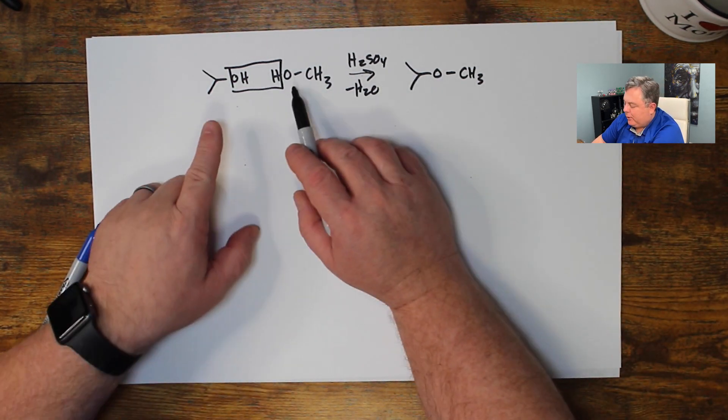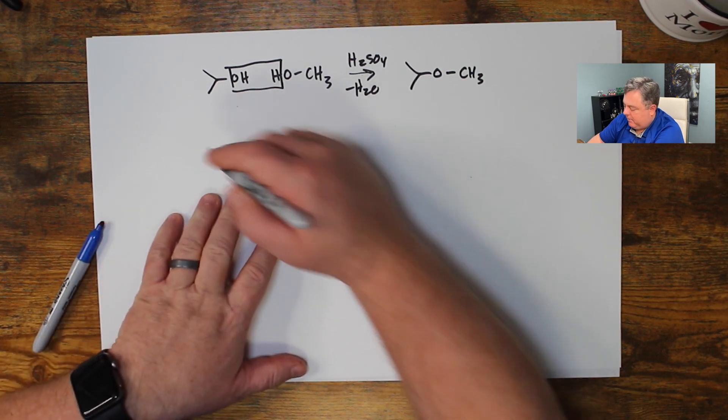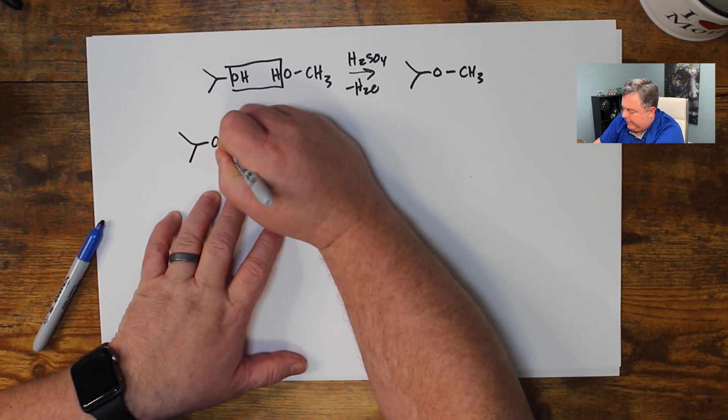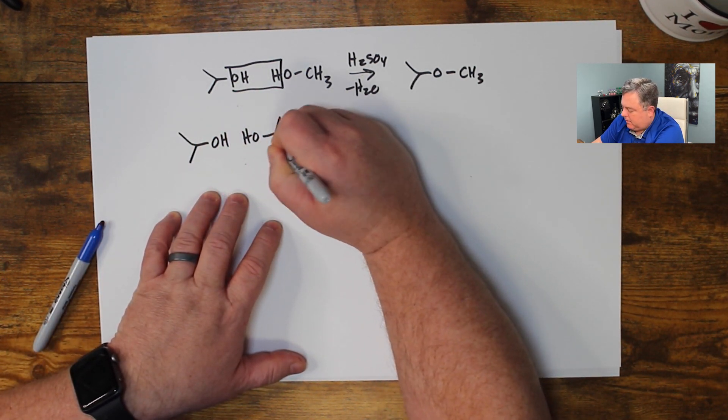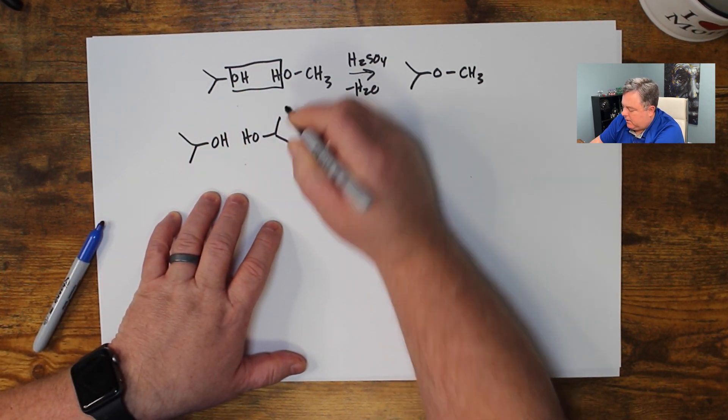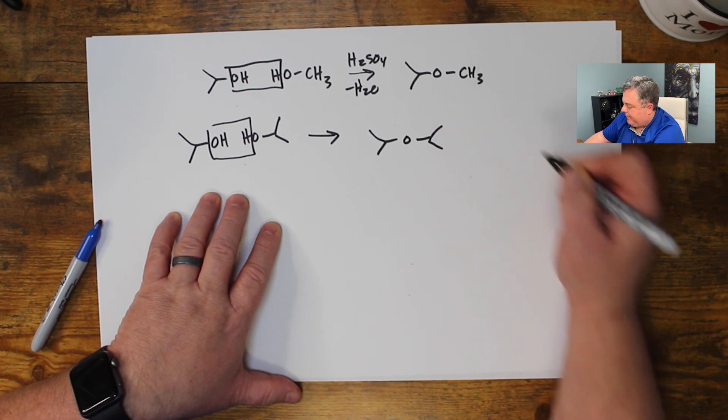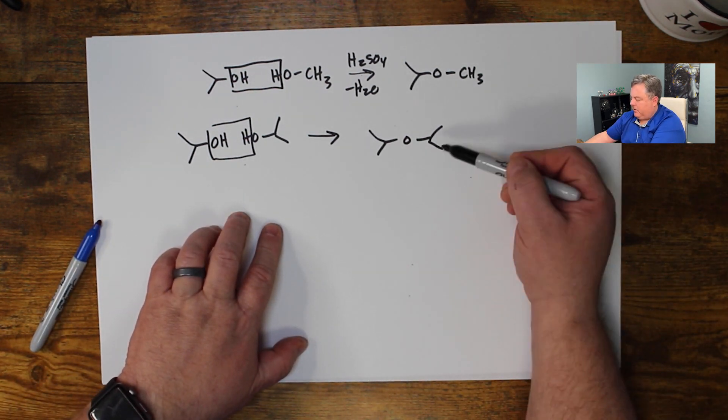Well so I need to clean this up with my water. It could come in, grab that H+, leave the electrons behind to make my final compound. So I made ether from ethanol and acid.